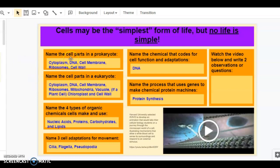The cell parts in a prokaryote you'll notice are fewer than those in a eukaryote because eukaryotes have membrane-bound organelles like mitochondria and chloroplasts and vacuoles. Our core four organic macromolecules include nucleic acids, proteins, carbohydrates, and lipids, and DNA is a nucleic acid that codes for cell function and adaptations like cilia, flagella, and pseudopodia, which are three adaptations for movement.